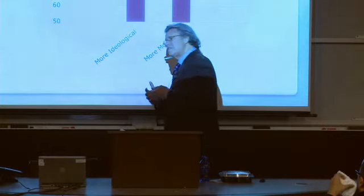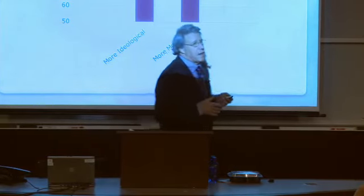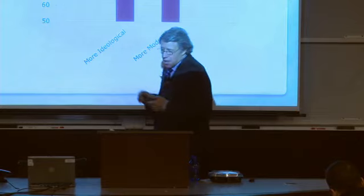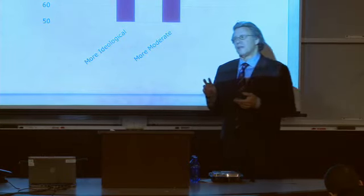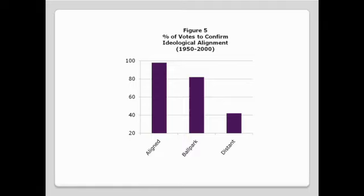Obviously, the more intense a nominee's perceived ideology, the greater the likelihood that members of the Senate will vote against. Another factor that helps explain how individual senators vote concerns ideological compatibility between the senator and the nominee. As Figure 5 reveals, senators vote to confirm 98% of the time when they are ideologically aligned with the nominee, but only 42% of the time when they are ideologically at odds with the nominee. So senators are more likely to vote against the nominee if they believe the nominee is less than highly qualified, highly ideological, or if they strongly disagree with the nominee's ideology.